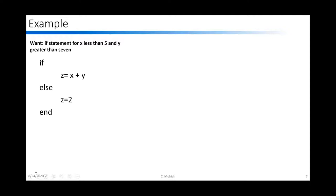Let's take an example and write this out. We want to say that z equals x plus y if and only if x is less than 5 AND y is greater than 7. So: if x less than 5 and y greater than 7, z equals x plus y; else, z equals 2; end.